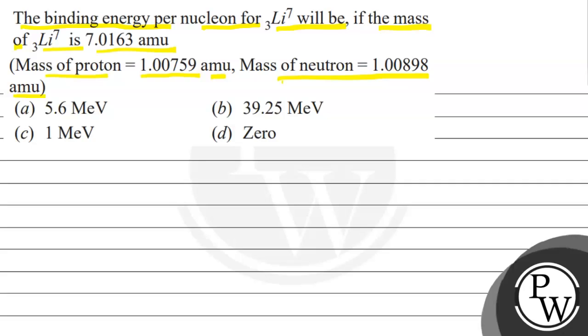Options are 5.6 MeV, 39.25 MeV, 1 MeV, or zero. We have to choose the correct option.